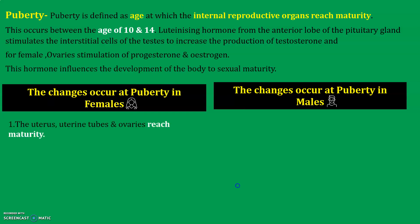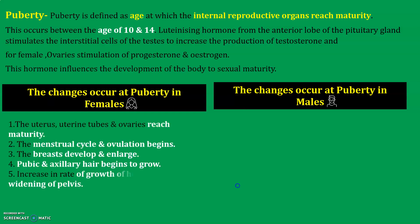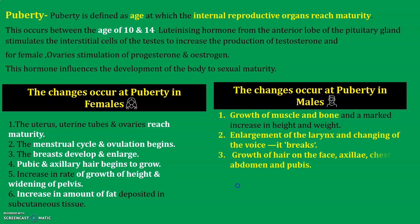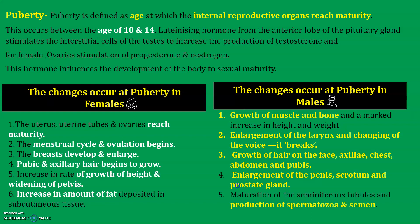What changes occur during puberty in females? The reproductive organs reach maturity, the menstrual cycle starts, ovulation begins, body shape changes, breasts develop and enlarge, hair begins to grow, and height, weight, and body fat increase. What changes occur in males? Growth of muscles, voice changes, hair growth on the face, change in size of the penis, growth of prostate glands, and production of spermatozoa.